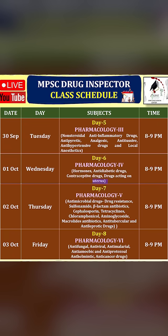1 October continued: drugs acting on uterus. 2 October, Pharmacology Part 5 — Antimicrobial drugs, drug resistance, sulfonamide, beta-lactam antibiotics, cephalosporins, tetracyclines, chloramphenicol, aminoglycosides, macrolide antibiotics, antitubercular, and antileprotic drugs.